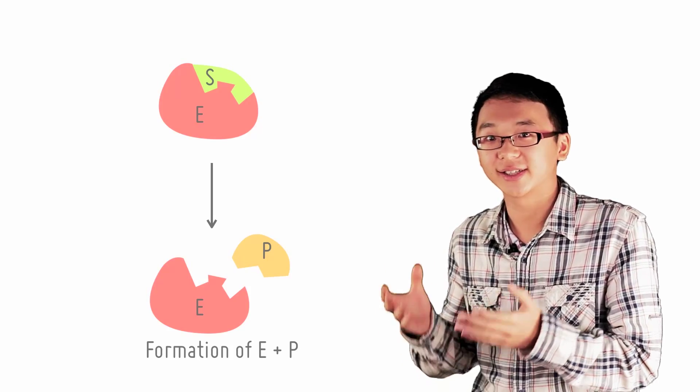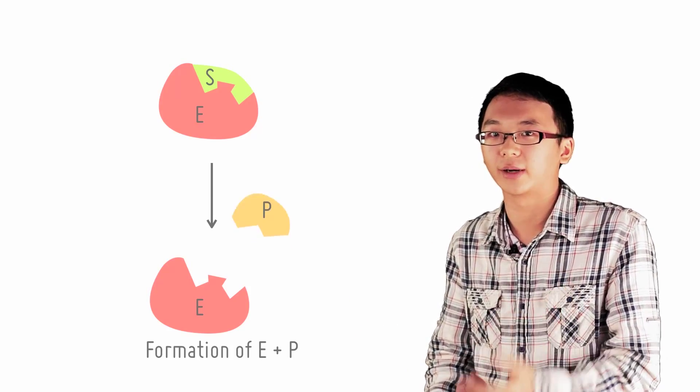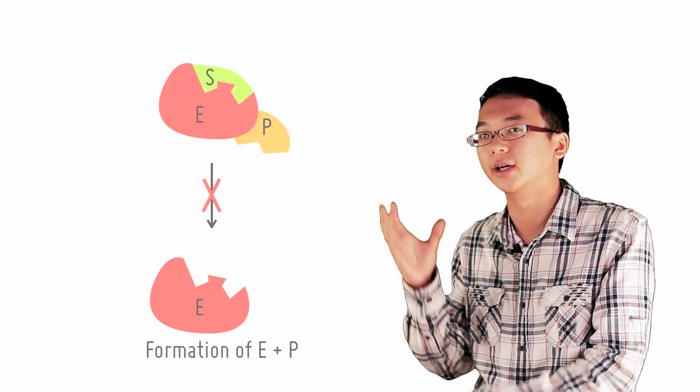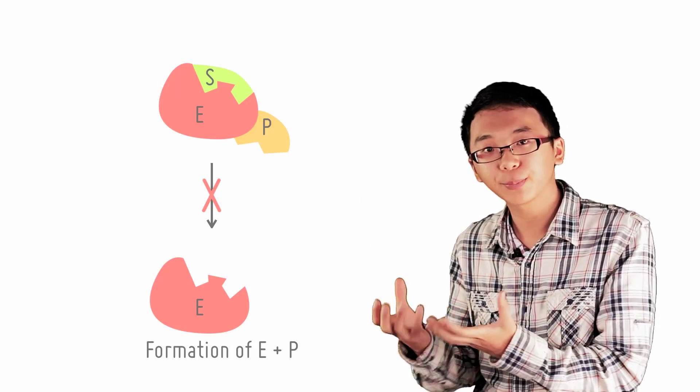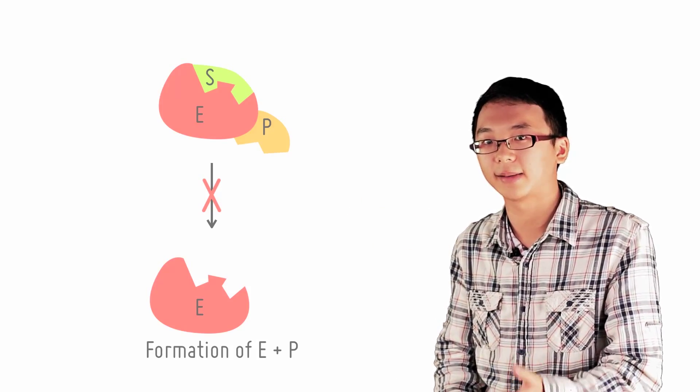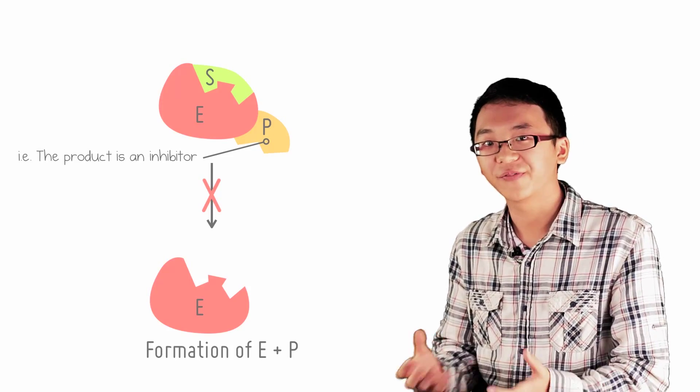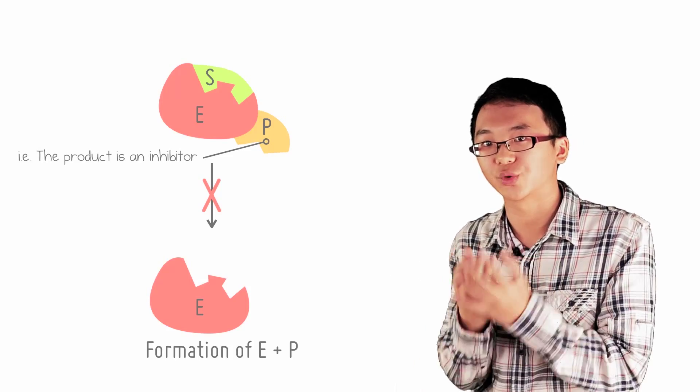a series of reactions is inhibited by the binding of the end-product to an enzyme that acts quite early in the pathway. As the end-product accumulates, it binds at the enzyme's allosteric site and prevents the enzyme from binding to the substrate,